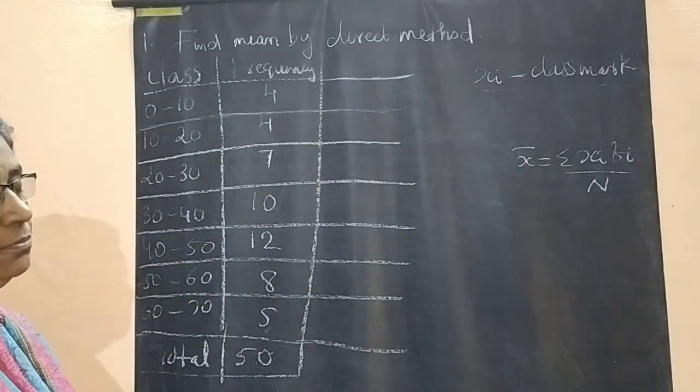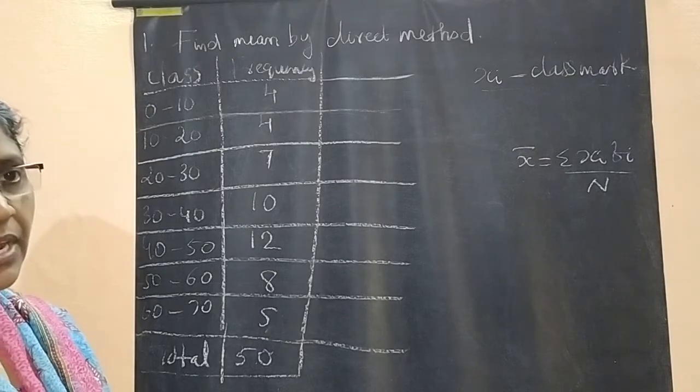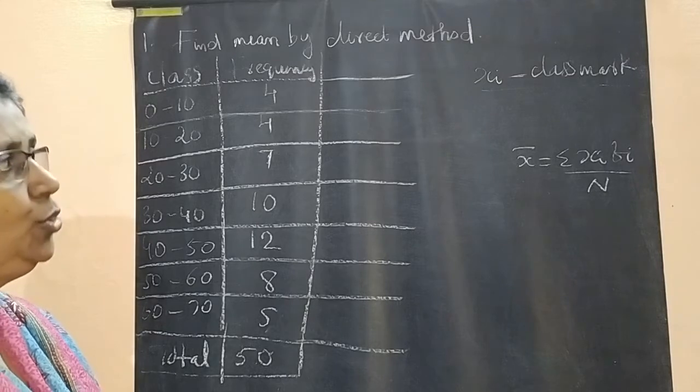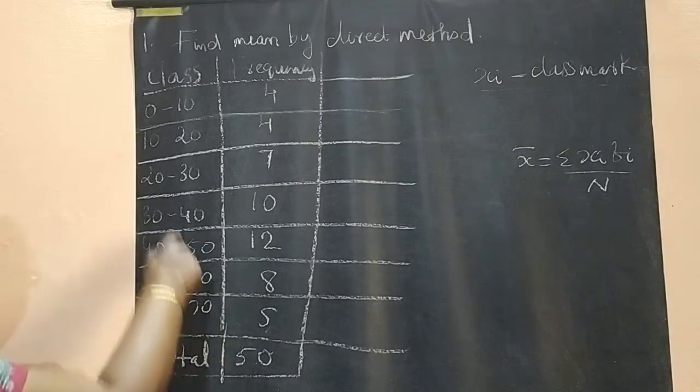Last class I told, class mark = (lower limit + upper limit) / 2. Class mark formula: lower limit plus upper limit divided by 2.